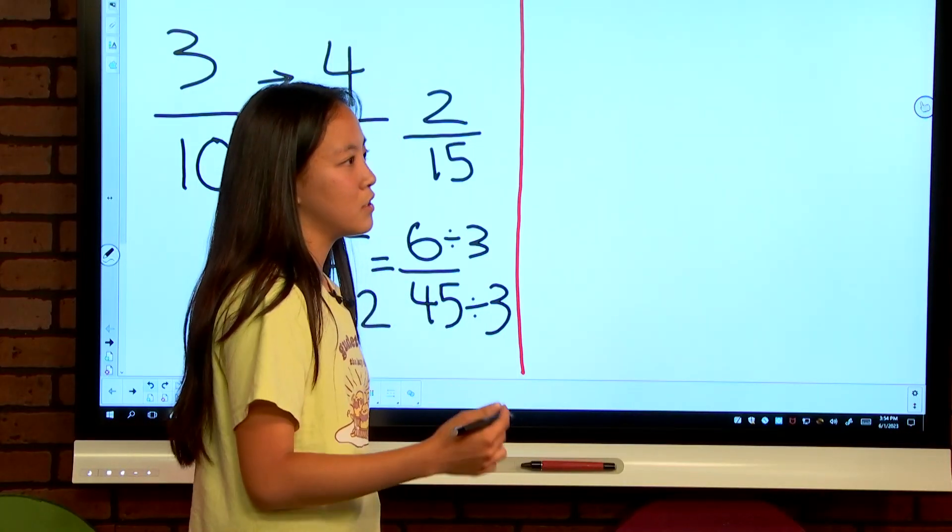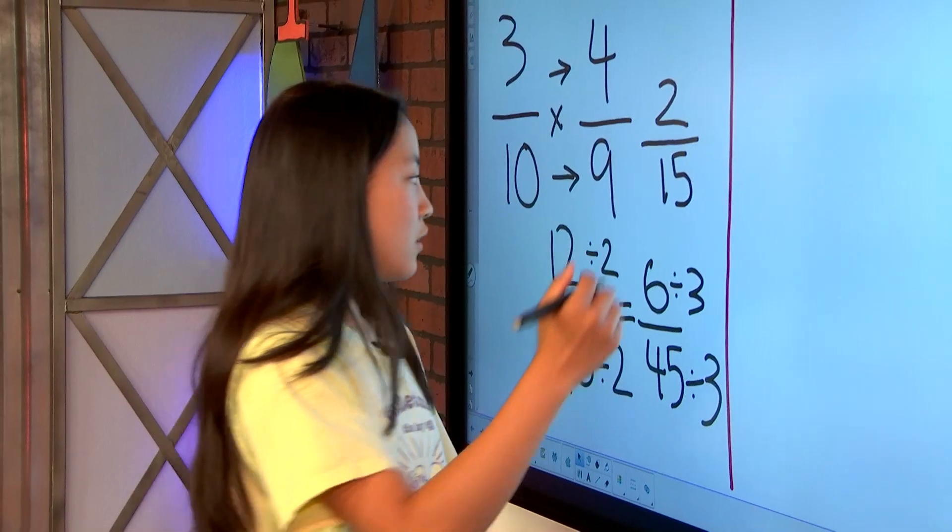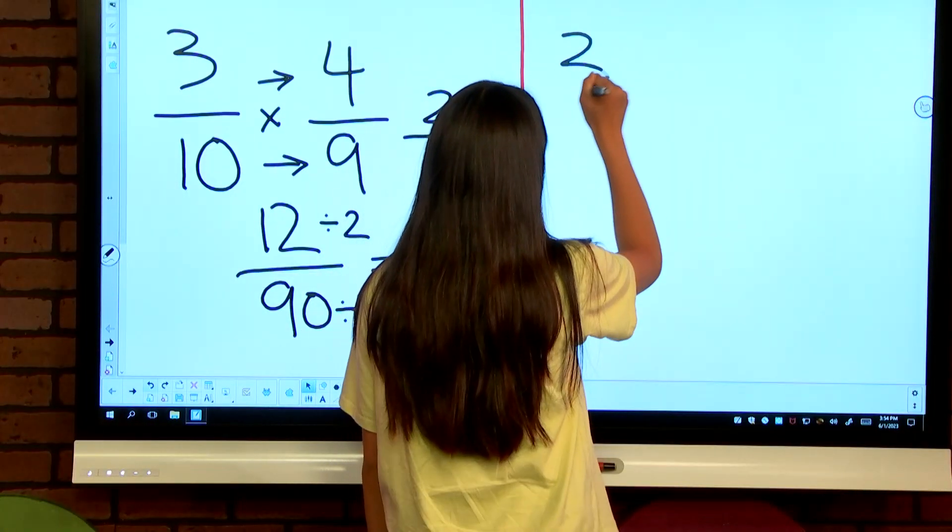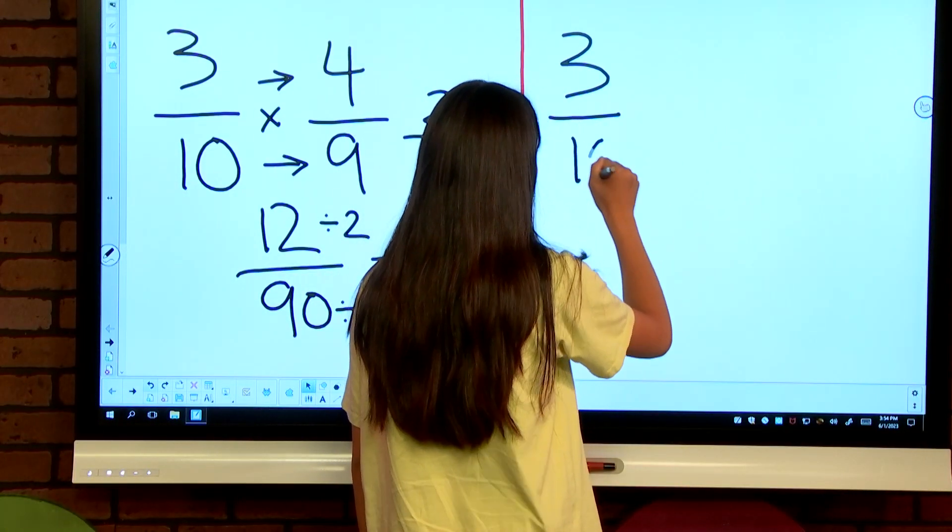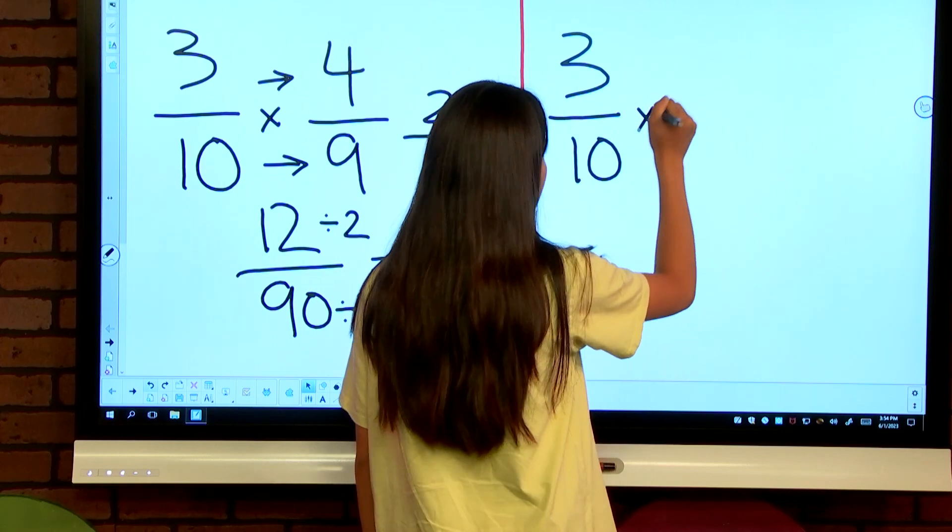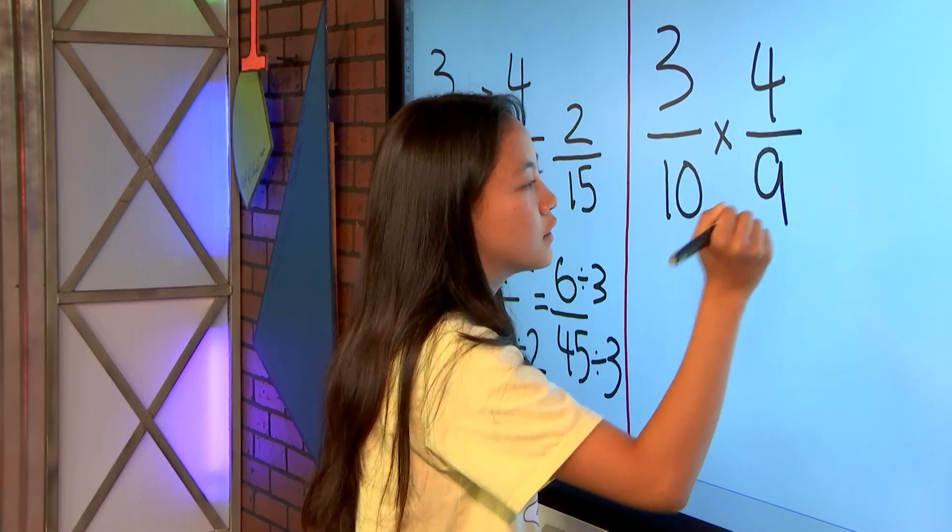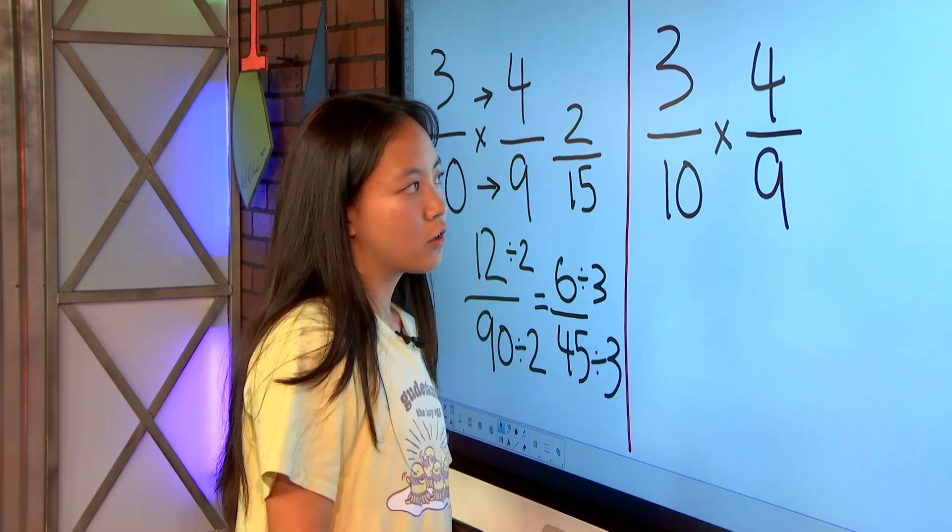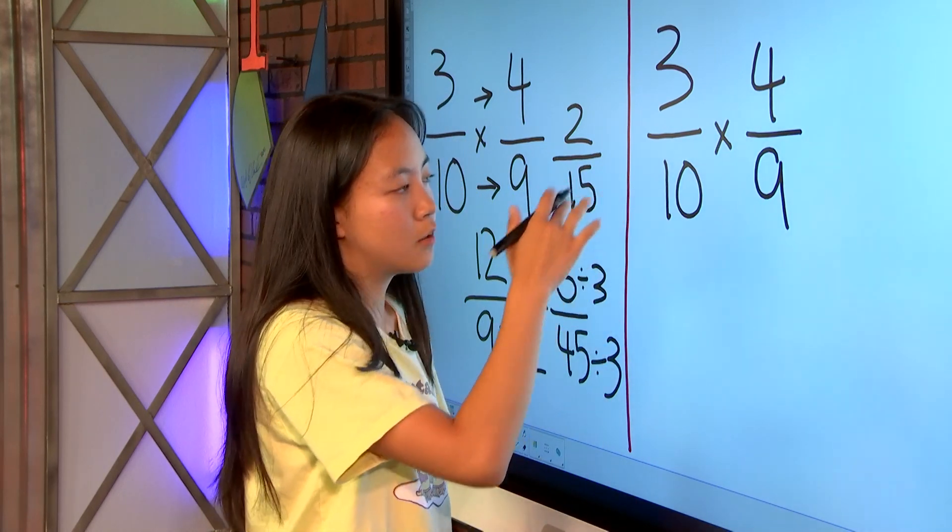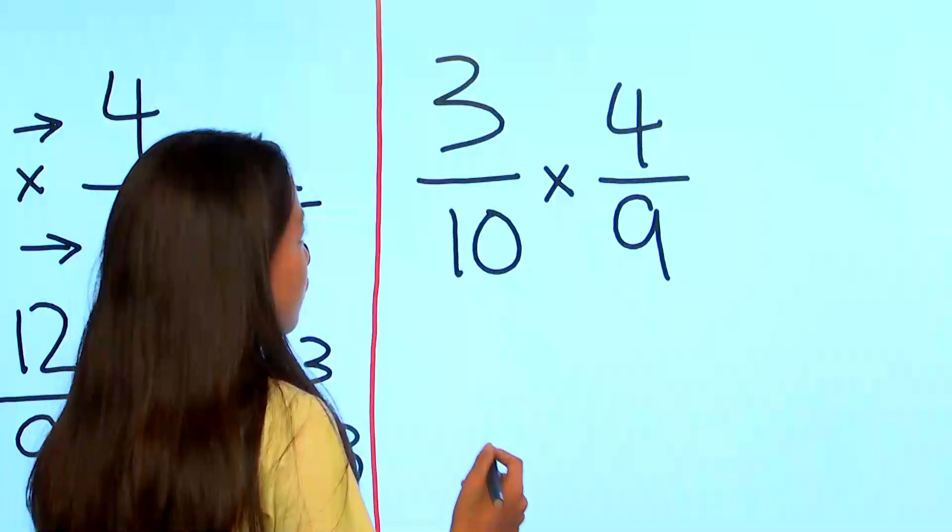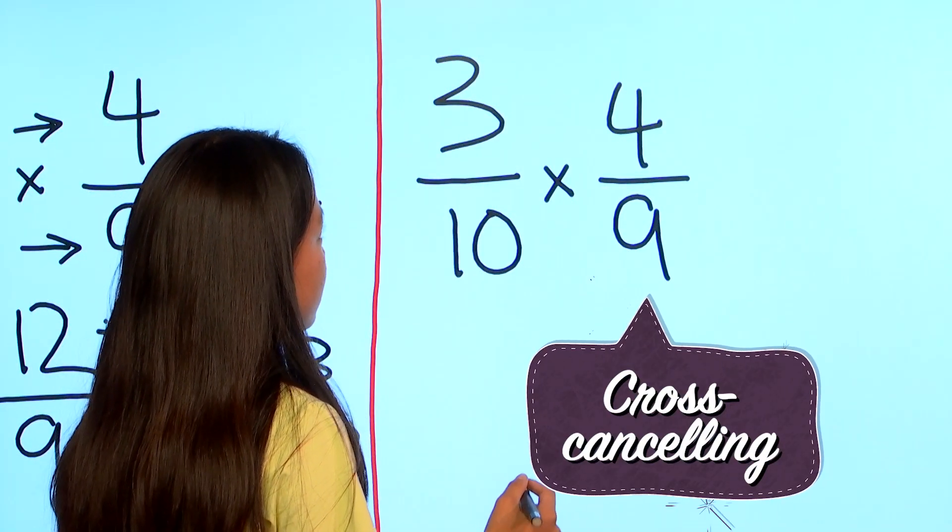This way might seem easier or harder depending on the way you like it. So I'm going to write the same problem. 3 tenths times 4 over 9. So instead of simplifying at the end, you're going to basically simplify in the problem. So you'd use this method called cross-canceling.